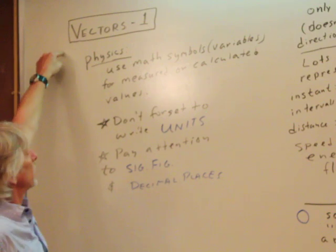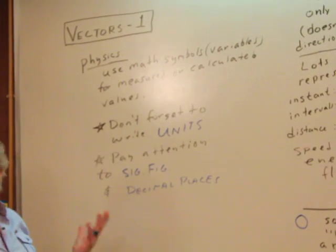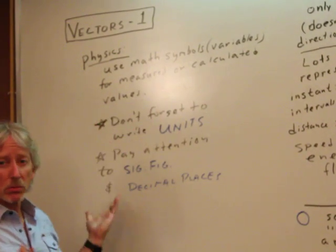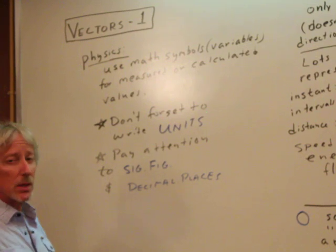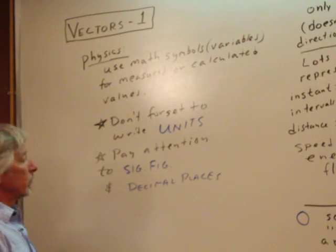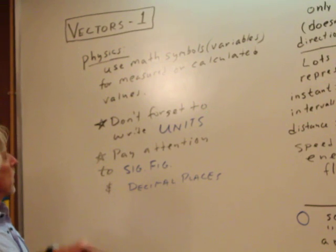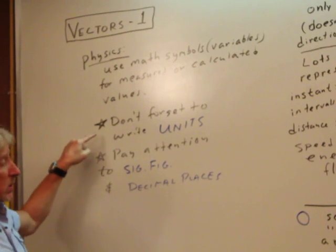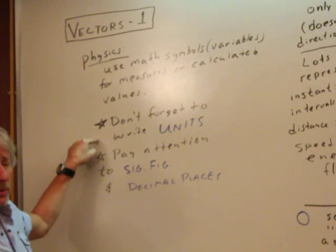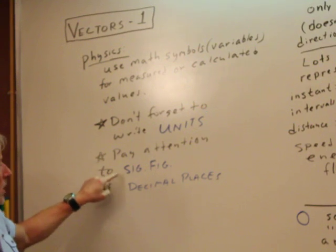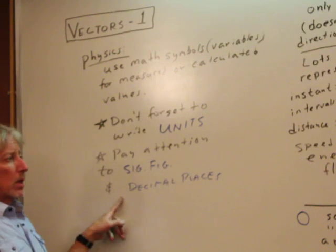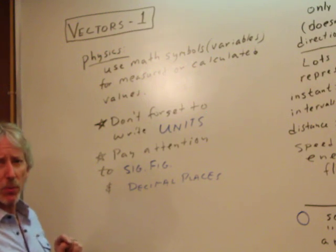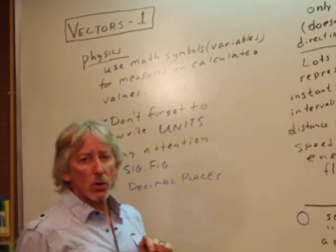And so remember that in physics, we use symbols or variables for mathematics, and they refer to some measured or calculated value. Any distance, any displacement, any time, any velocity, speed, and so on. Remember not to forget putting units on your numbers, numbers don't mean anything without units. Even if I know it's a speed, is it miles per hour, kilometers per hour, meters per second, what is it? Also, pay attention to significant figures and decimal places. At least have some awareness of that in this course.